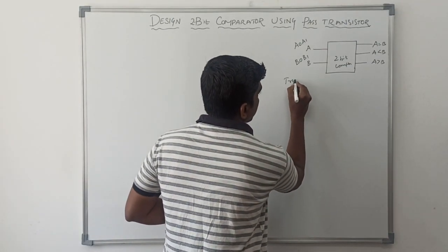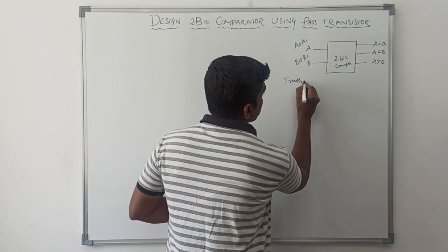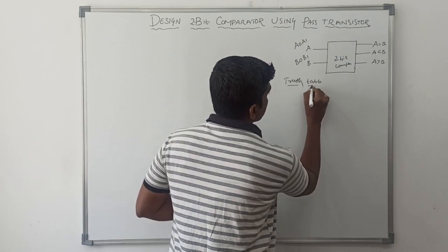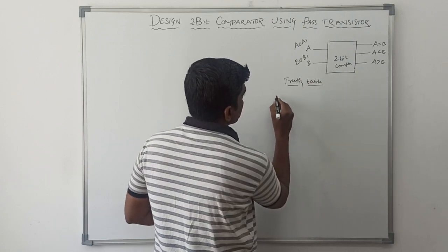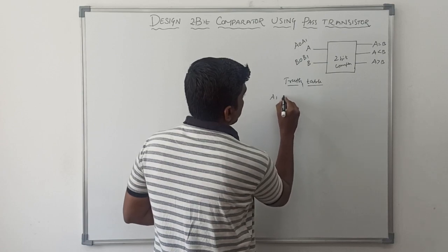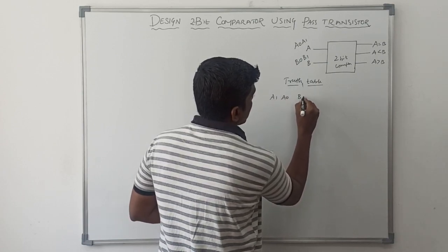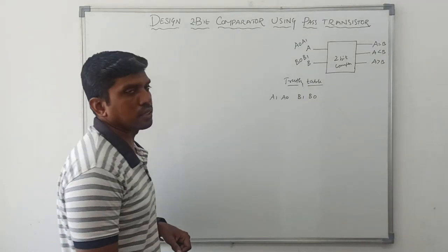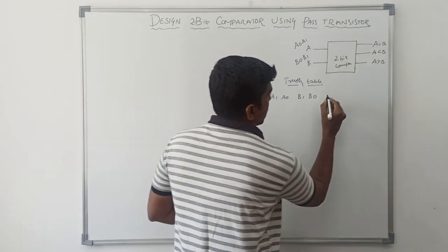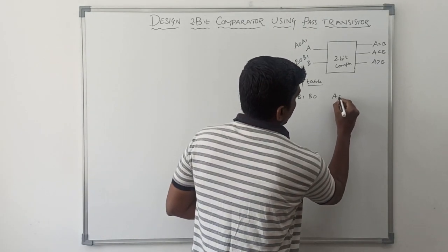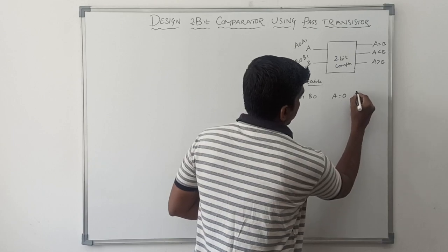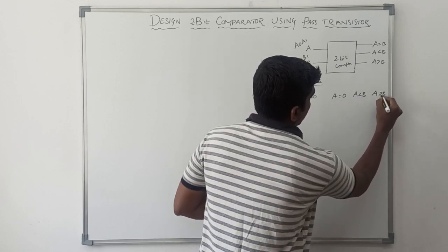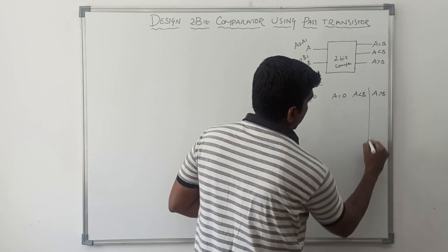Now I write the truth table input variables. The input variables are A1, A0, B1, B0 — these four variables are considered as input variables. The outputs are A equal to B, A less than B, and A greater than B.